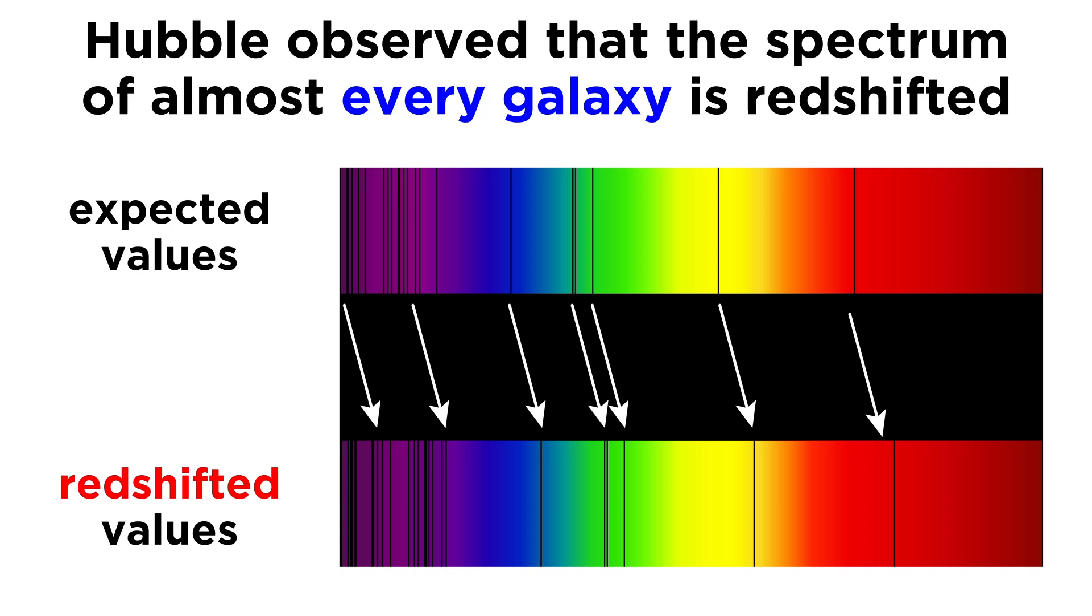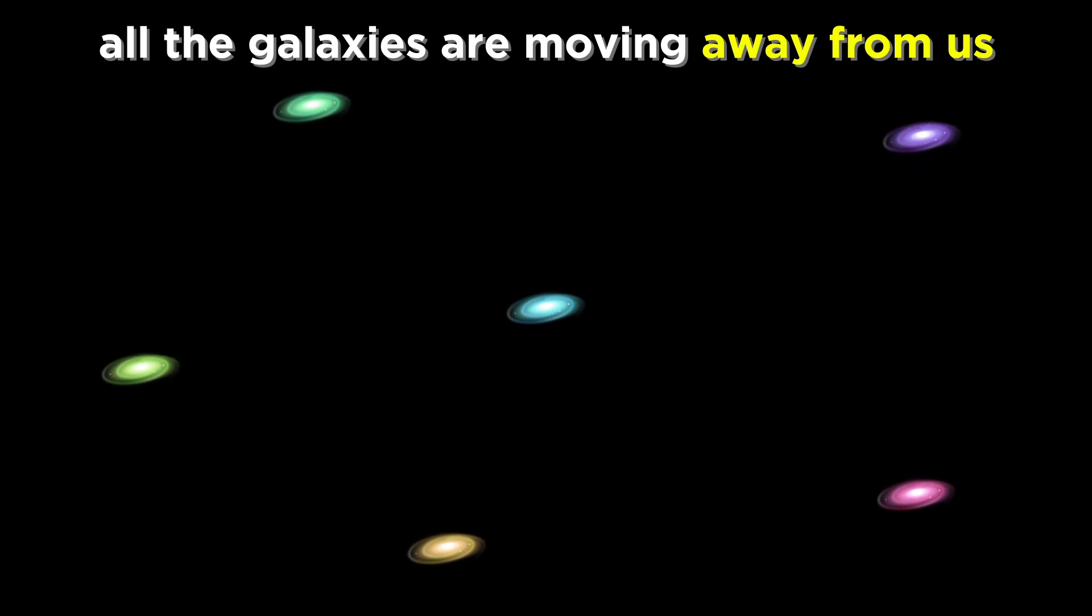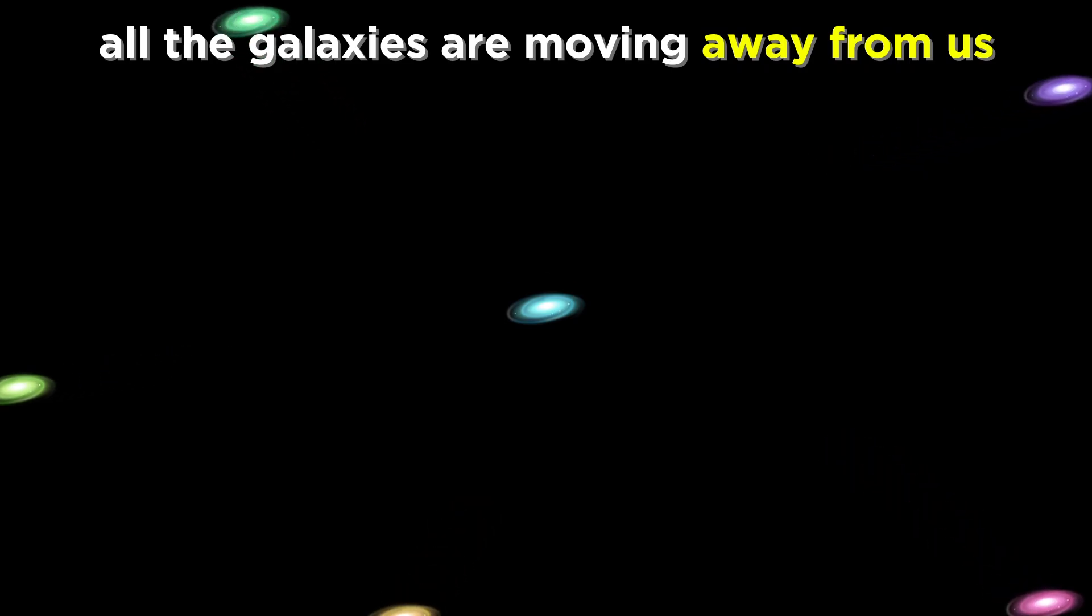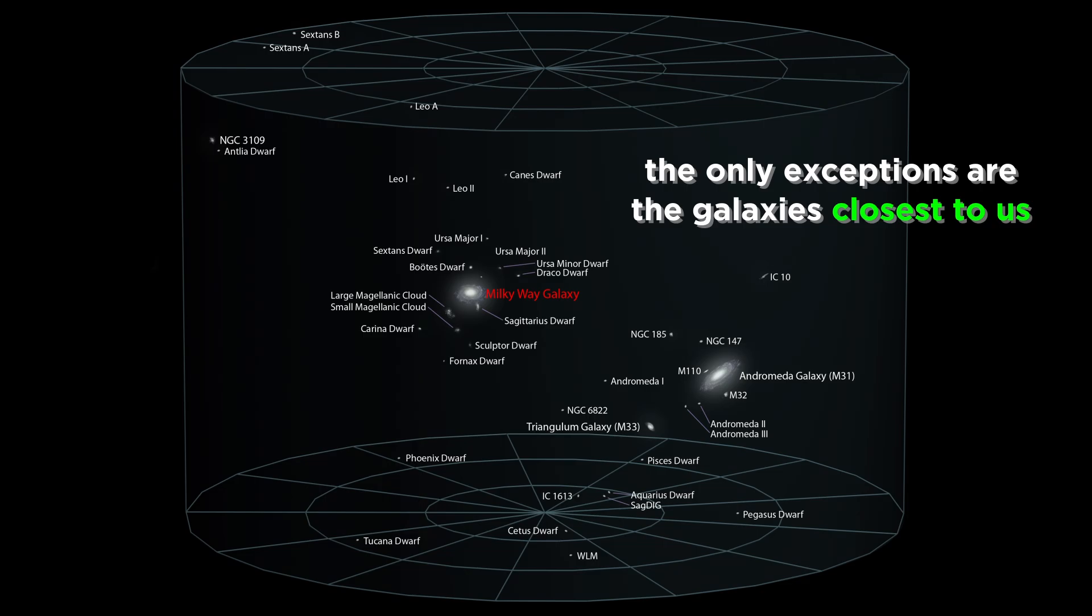When Hubble observed the emission spectra for a variety of galaxies, it became apparent that almost every single galaxy in the observable universe is red shifted, meaning they are almost all moving away from us, with the only exceptions being a handful of galaxies nearby that are gravitationally bound to the Milky Way.